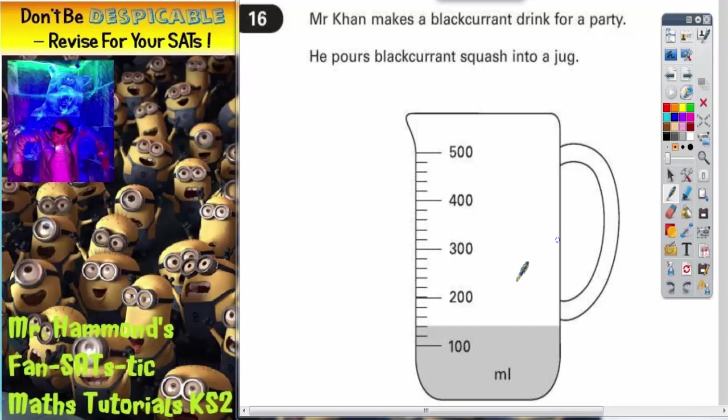So there's his jug. And we've got some numbers at the side, at the scale. 100, 200, 300, 400, 500 millilitres. ML stands for millilitres.